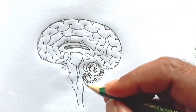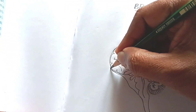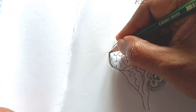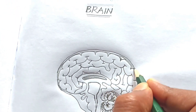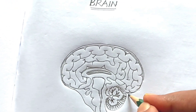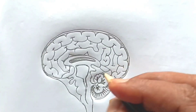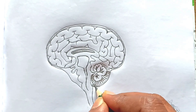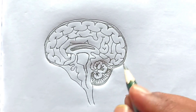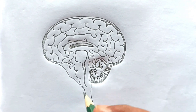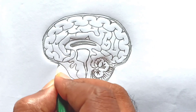Outside the brain there are three layers called meninges, which protect the brain from minor shocks. This is the third layer of the meninges.